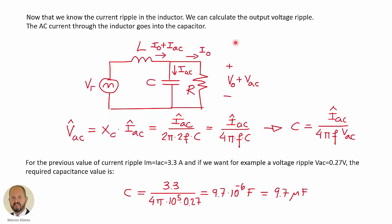To calculate the value of the capacitance, we go back to our equivalent circuit. We can see that through the inductor we have the average current I_0, which is also the current through the output. We have an AC current superposed to the DC current of the inductor, and this AC current we can assume will approximately circulate through the capacitor. This is going to generate an AC voltage ripple superposed to the DC output voltage.